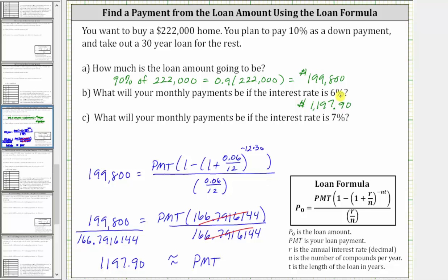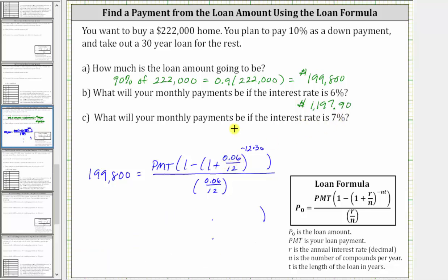And now for part C, we're asked to determine the monthly payments if the interest rate is 7% instead of 6%. So to make this change, we can go back up to this equation here and simply change 0.06, which is 6% as a decimal, to 0.07, which is 7% as a decimal. So we will now change 0.06 here and here to 0.07.